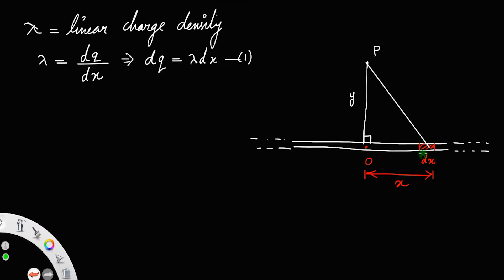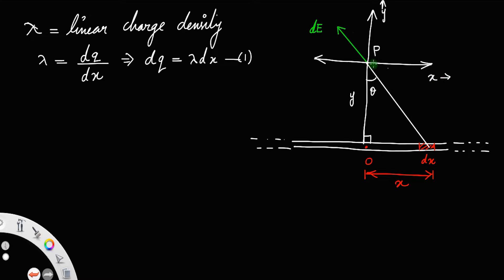This charge produces an electric field at point P, and its direction will be radially outward. Let us take that as dE, and let us assume this angle to be θ. Drawing the perpendicular x and y axes, we can resolve dE into a component along the horizontal, that will be dE sinθ, and one along the y direction, that will be dE cosθ.